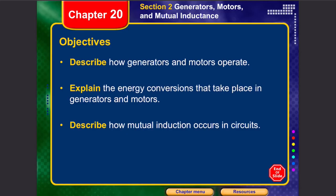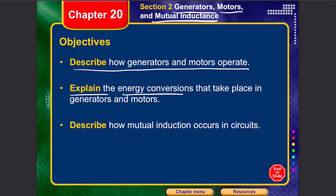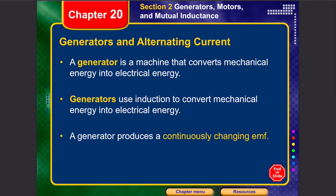Next, let's discuss generators, motors, and mutual inductance. After completing this section you should be able to describe how generators and motors operate, explain the energy conversions that take place in generators and motors, and describe how mutual induction occurs in circuits.